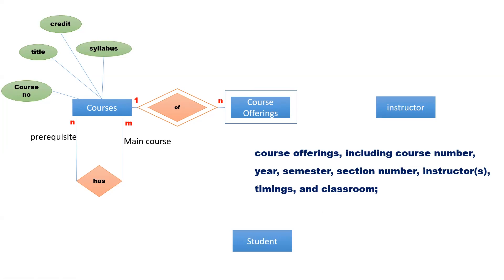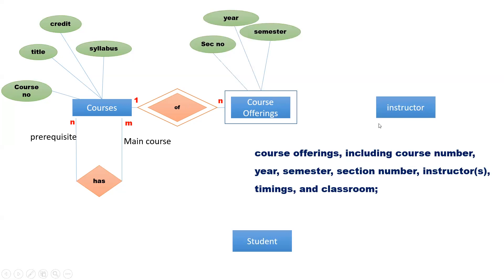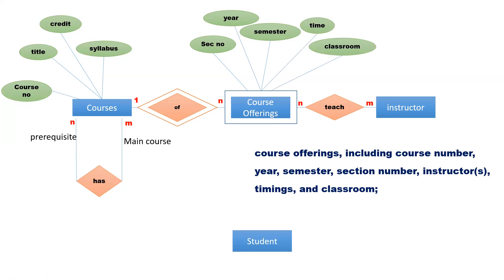The attributes of course offerings are session number, year and semester. The instructor is drawn as a separate entity, so we can have a relationship between the course offering and the instructor. A course offering can be taught by many instructors and one instructor can teach many course offerings, so that means this is also many-to-many.